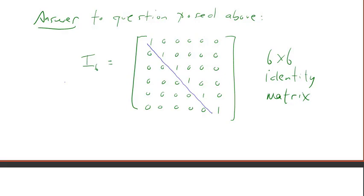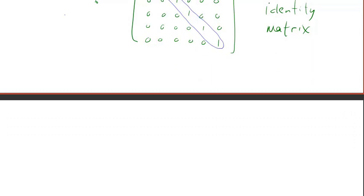As promised, here's the answer to the six by six identity matrix. Just got ones down the main diagonal, zeros elsewhere.